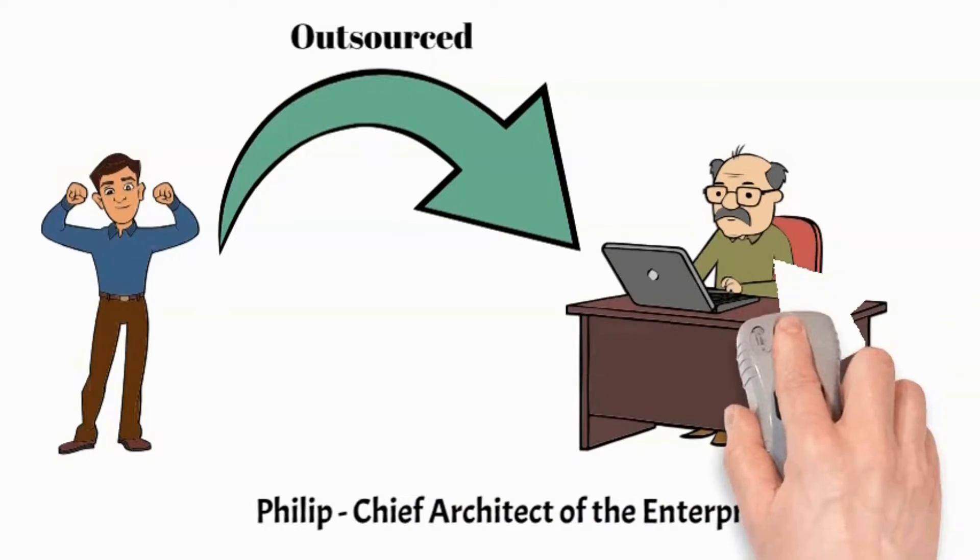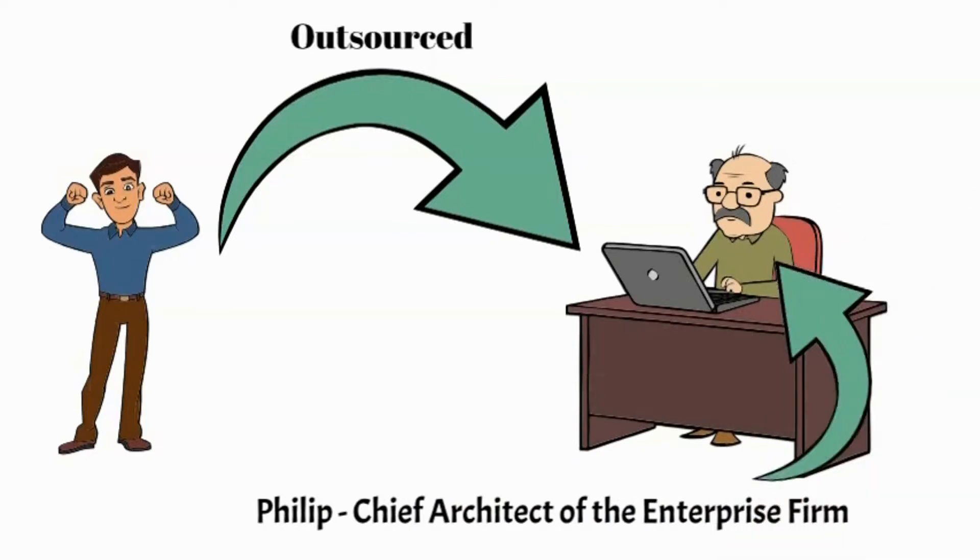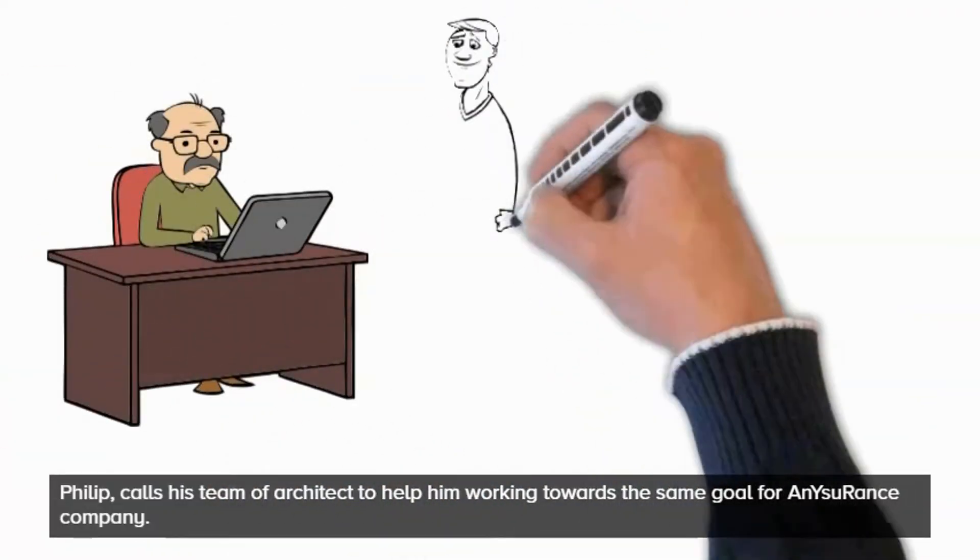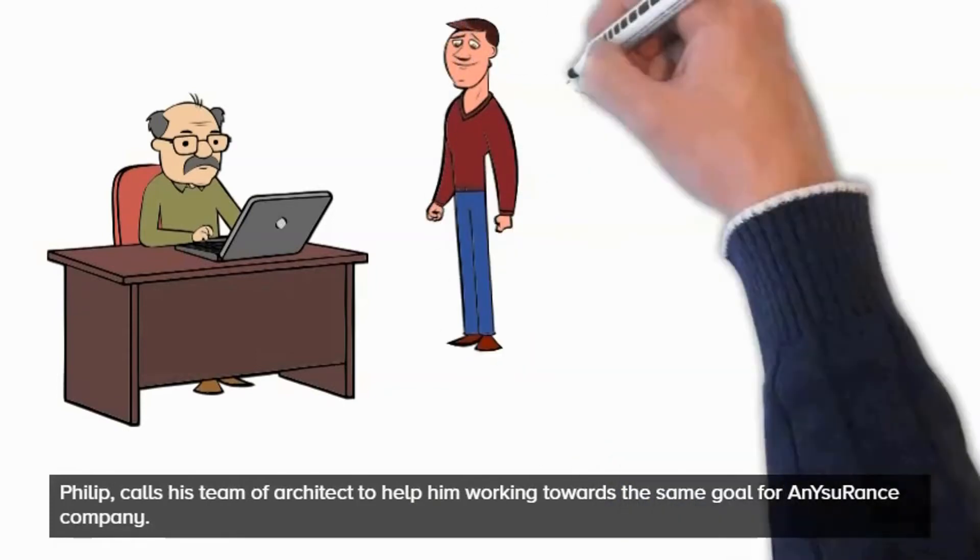Let me introduce Philip here. He is the Chief Enterprise Architect in his firm and he is responsible to deliver this work for Any Insurance company. Philip calls his team of architects to help him work towards the same goal for Any Insurance company.